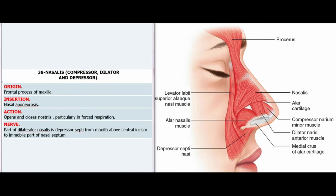38. Nasalis (compressor, dilator, and depressor). Origin: Frontal process of maxilla. Insertion: Nasal aponeurosis. Action: Opens and closes nostrils, particularly in forced respiration. Note: Part of dilator nasalis is depressor septi, from maxilla above central incisor to immobile part of nasal septum.